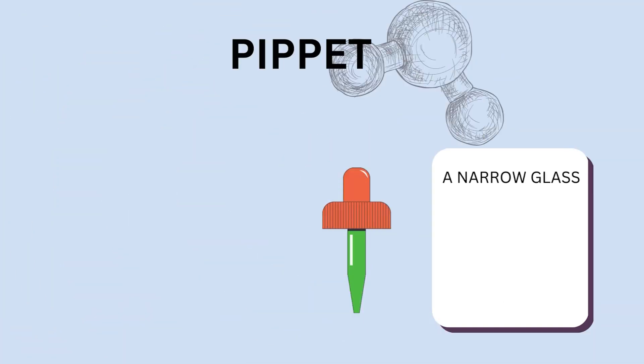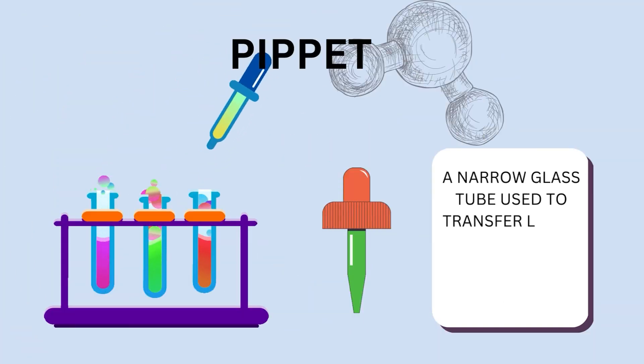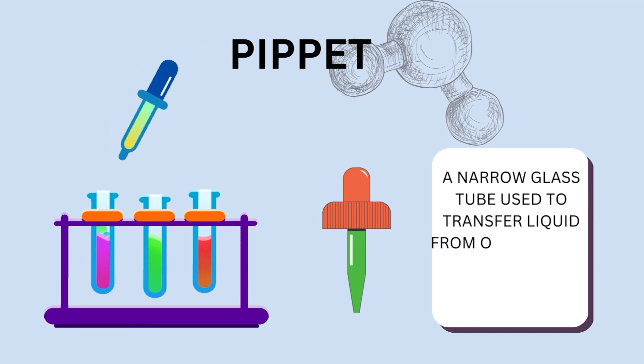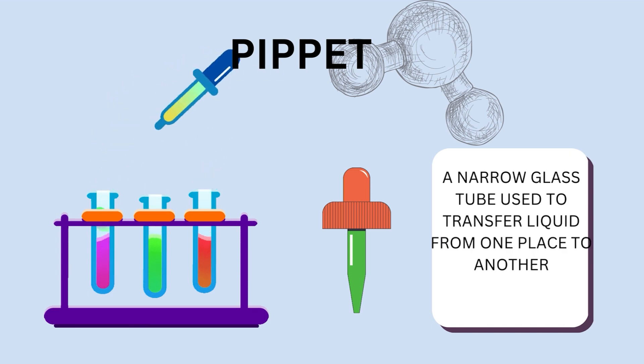Pipette. A narrow glass tube used to transfer liquids from one vessel to another.